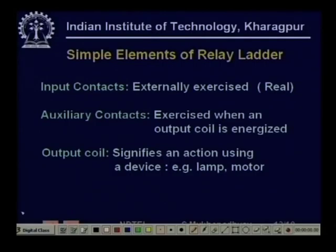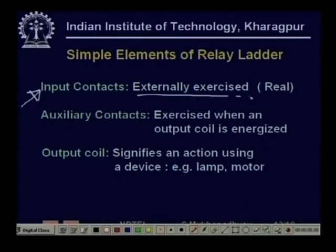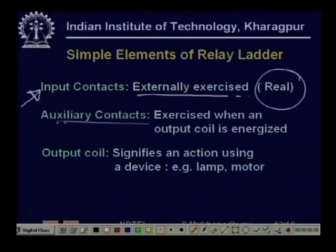The switches are of two types. Some are called input contacts, which correspond to real physical inputs — for example, a photo detector detecting a part and going to 1, a limit switch, a pressure switch, or a push button pressed by the operator. Such contacts are called input contacts, exercised externally by the machine, meaning external to the PLC, and corresponding to real physical devices.